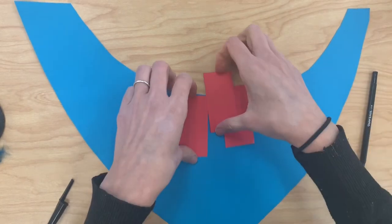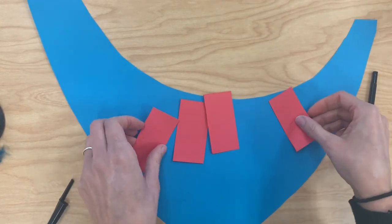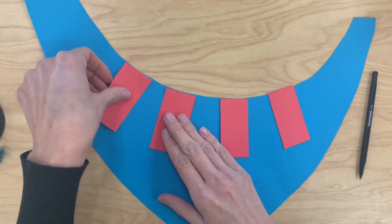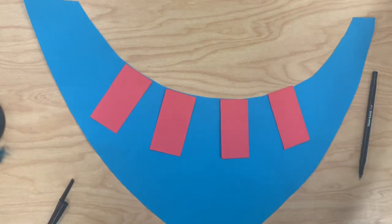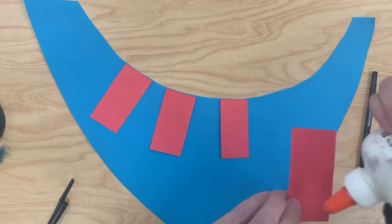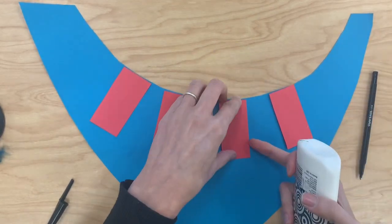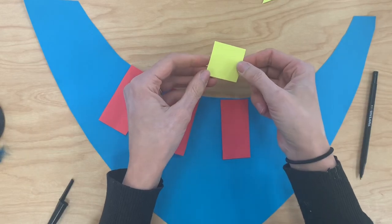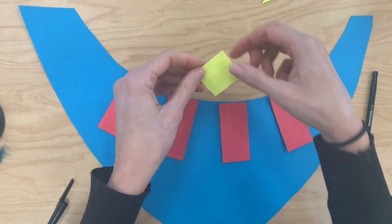So here I've created some rectangles. I can even glue them down around the neck part like this. I can also take this square and fold it diagonally.